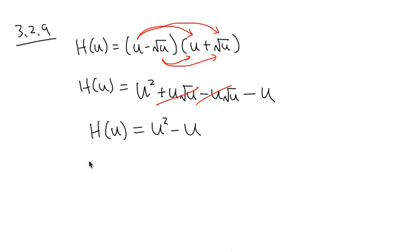By looking at this, I can just use the regular power rule to take the derivative. So, the derivative of u to the square, u to the second power, I mean, derivative of that is equal to 2u. And the derivative of minus u is just equal to minus 1. And that's it.